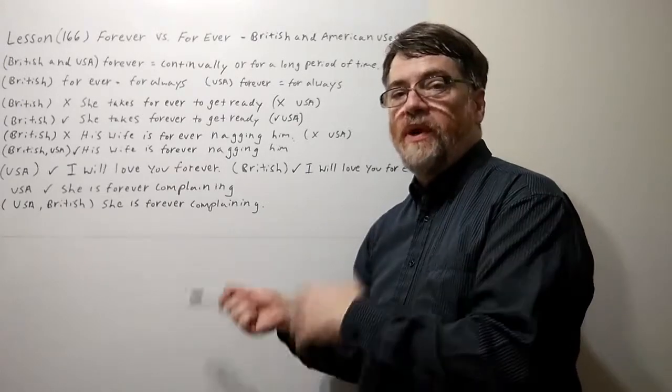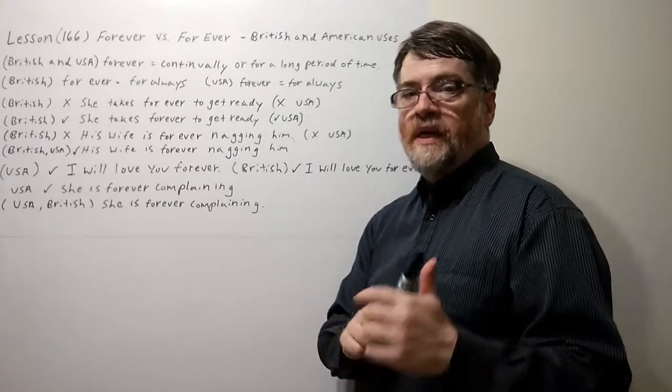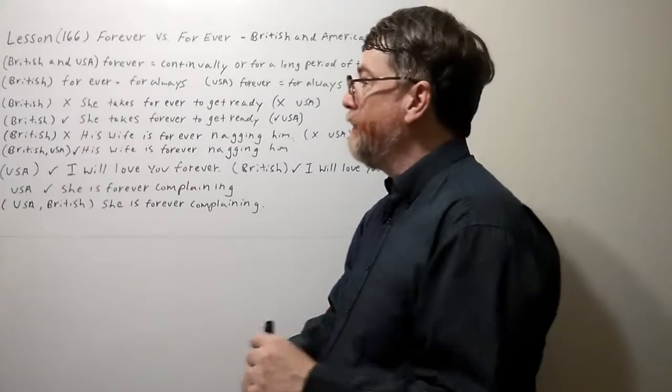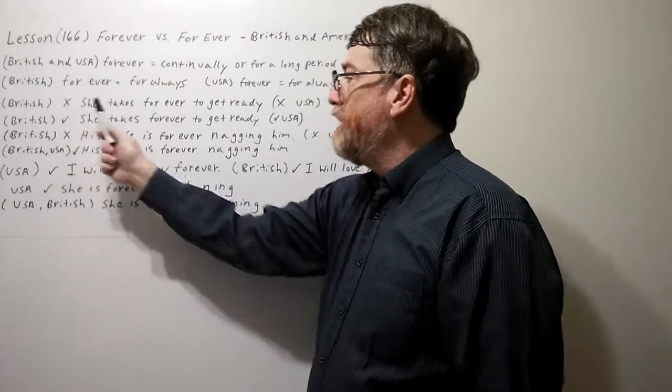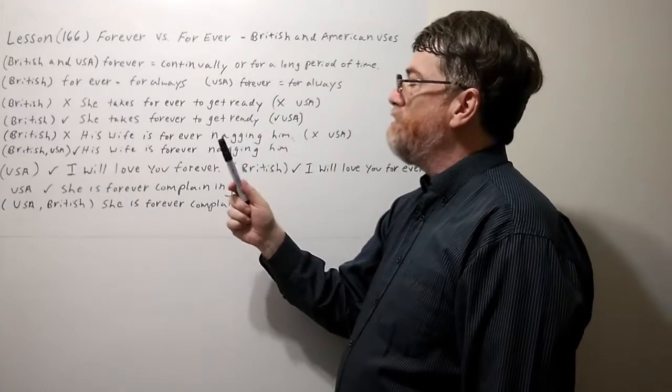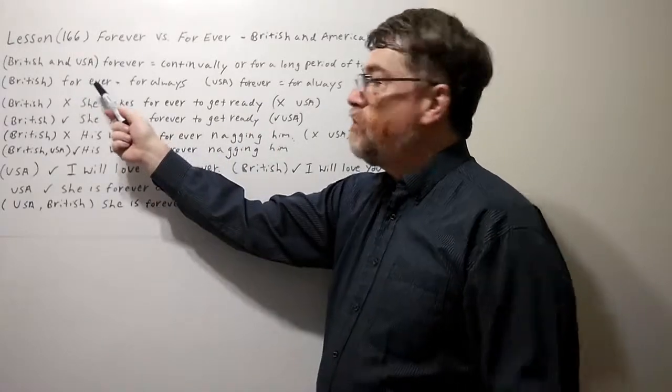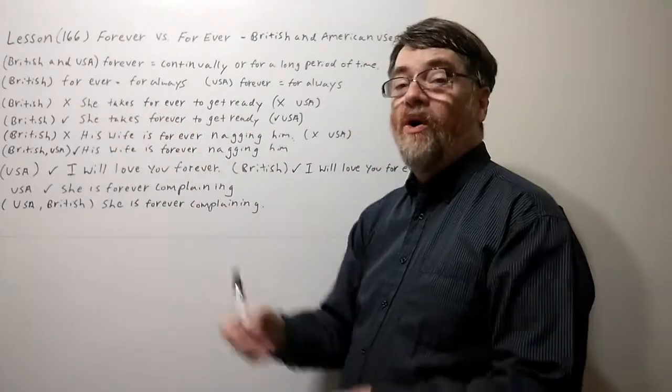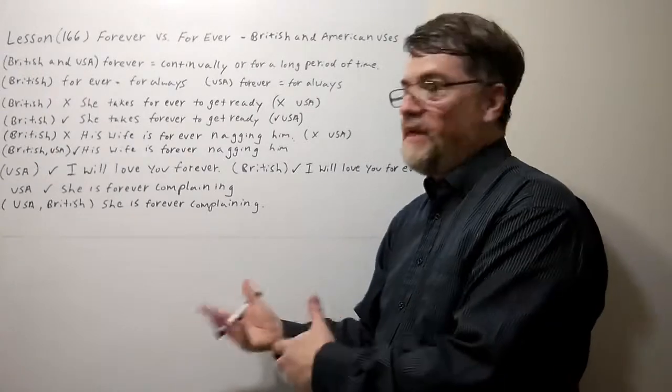Okay, let's look at the first example where in British English this would be considered to be wrong. So here with the X, she takes forever to get ready. Remember, for ever with two words in British English means for always. Now you don't really mean that.